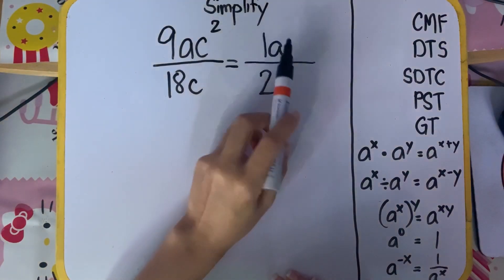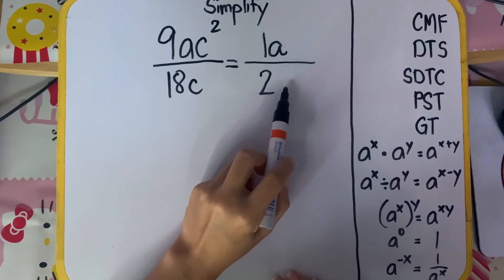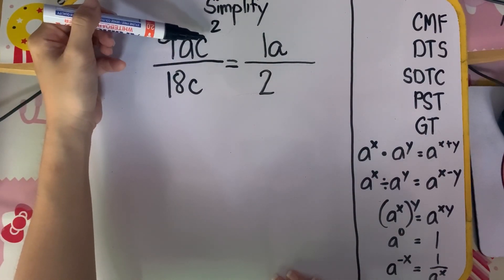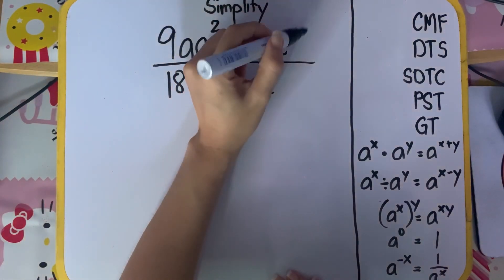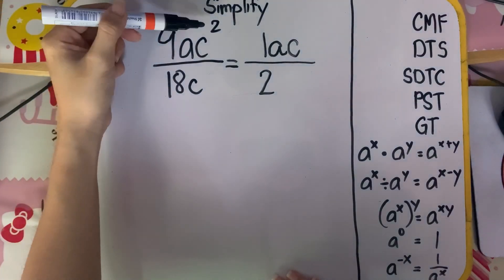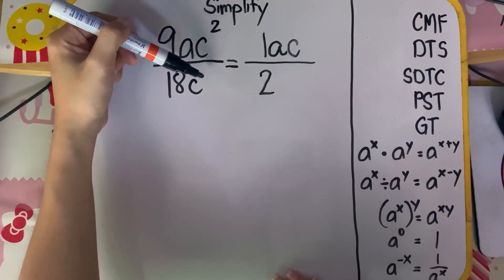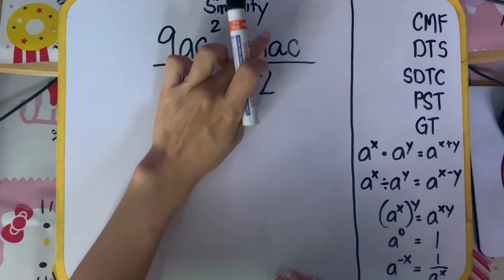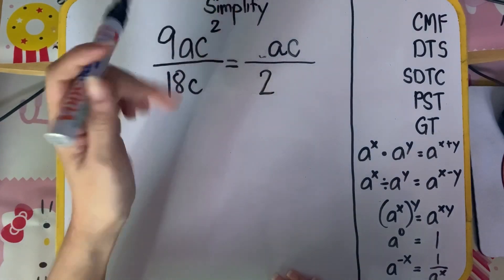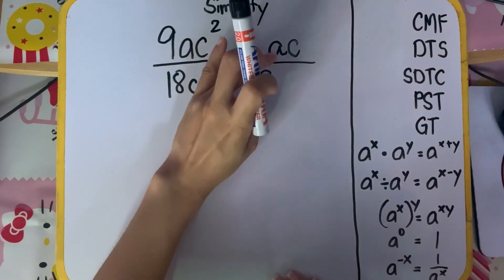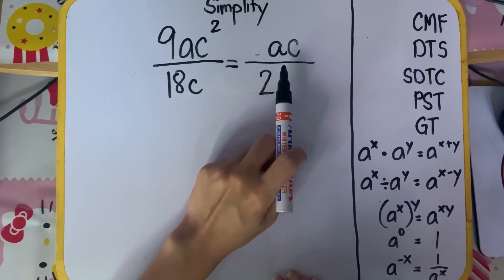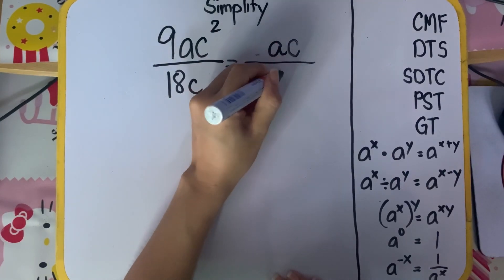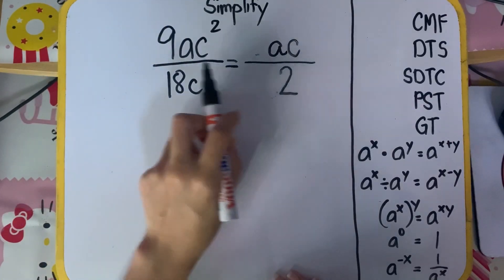Where do we place the C? The technique is: whichever side has the bigger exponent, that's where you place the answer. Since the numerator has the bigger exponent for C, place the result in the numerator. We divided by subtracting exponents: 2 minus 1 equals 1, so the result is just C. When 1 is beside a variable, the 1 is invisible — you don't have to write it. Your final answer is AC over 2. That is the simplified form.